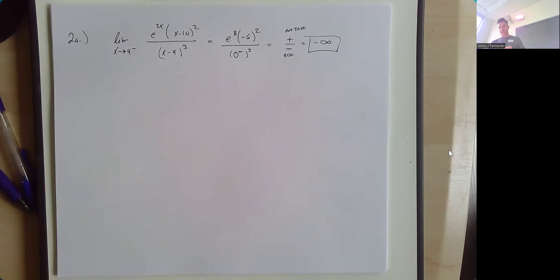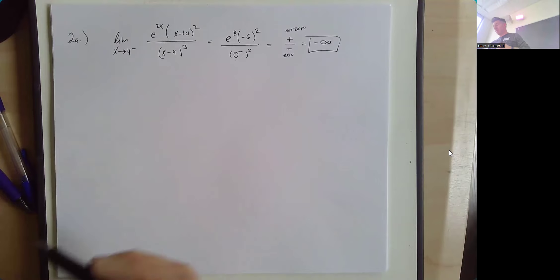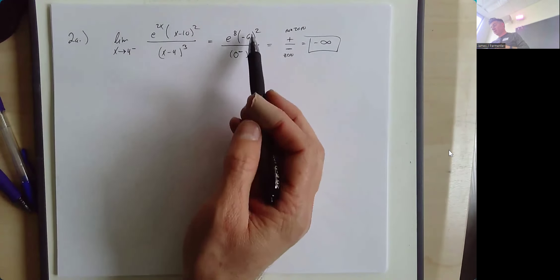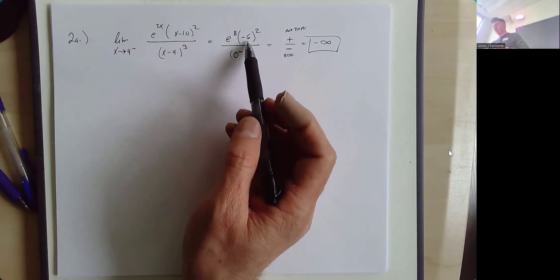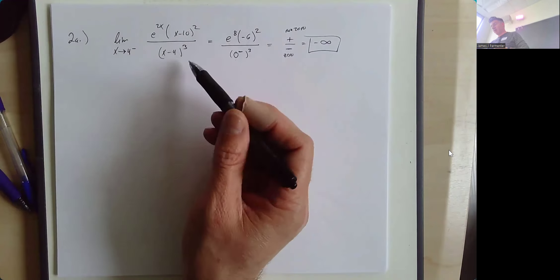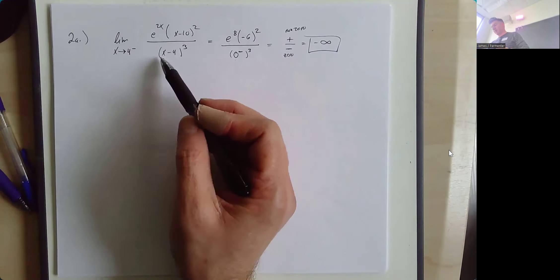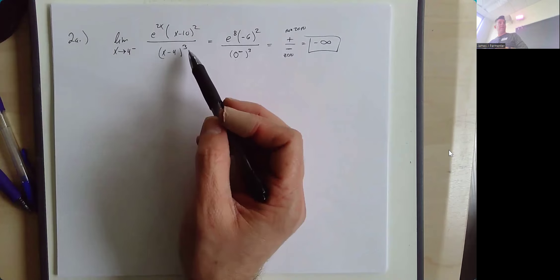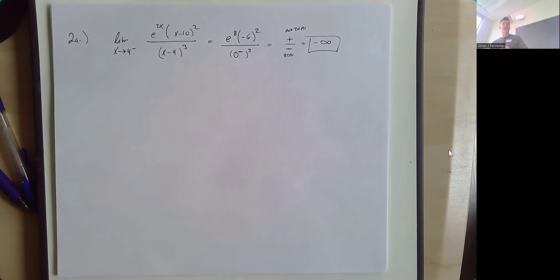Here's a fun question: what if we came from the other side? Would it still be negative or would it turn positive? It would be positive — the top is going to stay the same sign, still e to the eighth times negative six squared, but now the denominator is going to be slightly positive to an odd power, which stays positive. So it would be the opposite sign.